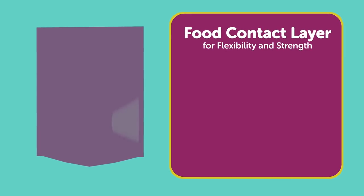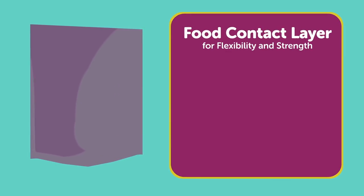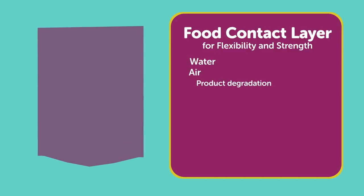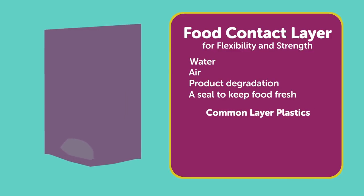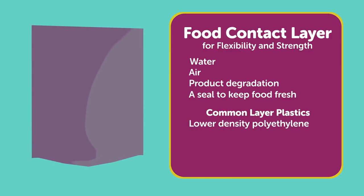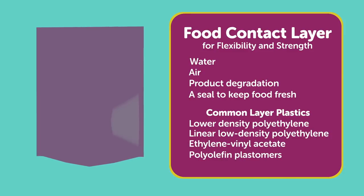The food contact layer provides flexibility and strength. It's the first line of defense against water, air, and product degradation, acting as a seal to keep food fresh. Some common materials for the food contact layer include LDPE or LLDPE, EVA, polyolefin plastomers, and ionomers.